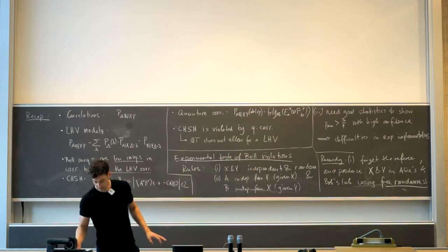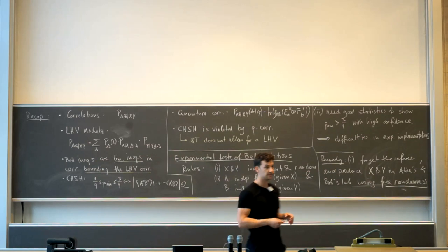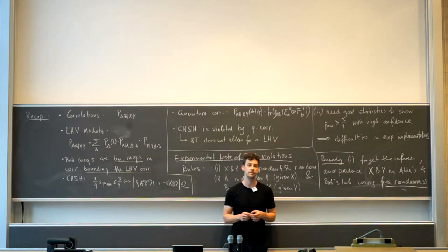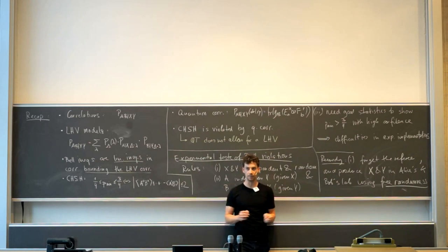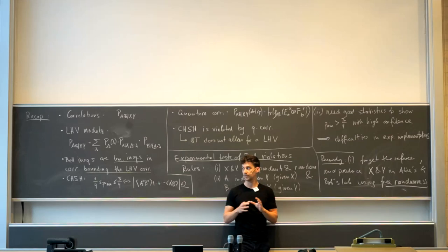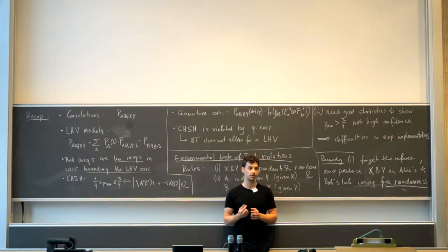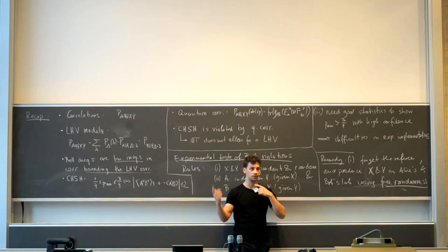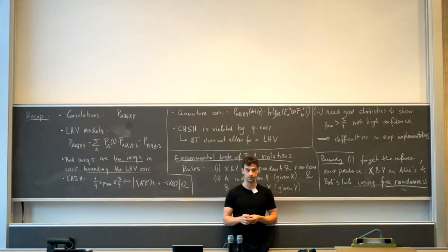Free randomness means the outcomes are actually random and independent from anything else that happened before. Whatever other random variable you or someone else might have is uncorrelated to the outcome. You can never prove free randomness exists in nature, because you cannot prove nature is not super-deterministic — that everything is predetermined. We will never be able to rule that out. But if you allow the thought that we're not in a super-deterministic world, there are very good arguments for free randomness to exist — for instance, by measuring qubit states prepared close to a pure state with post-processing.